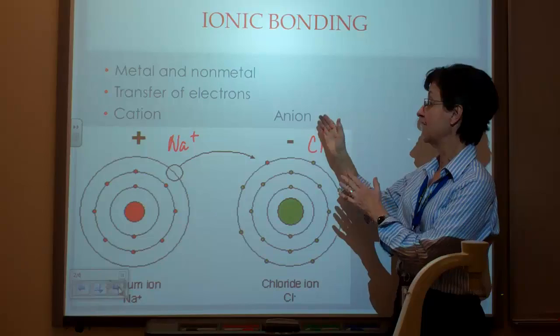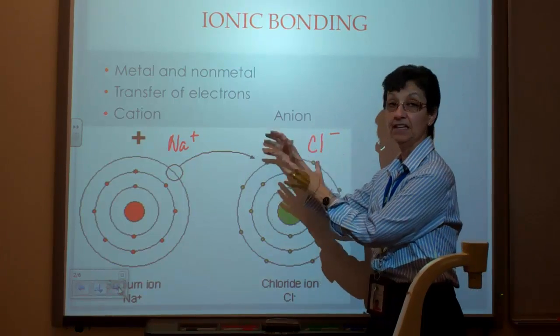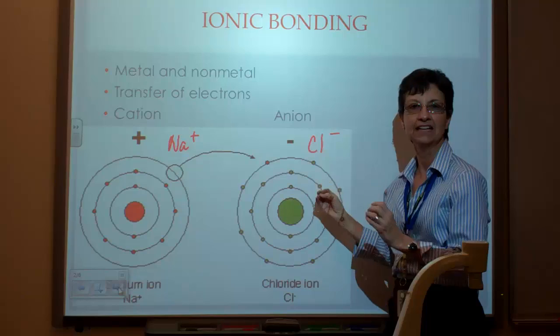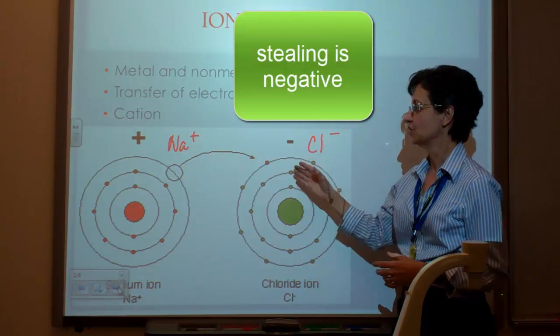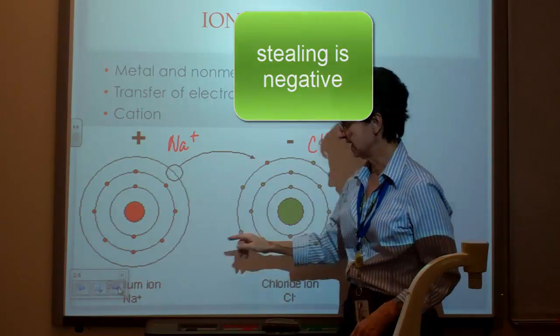Anions do not have a plus in the middle, so they're negatively charged. You could also remember it as anions. The negative ion steals, and that's a negative thing. Stealing is negative, right? We all know that.